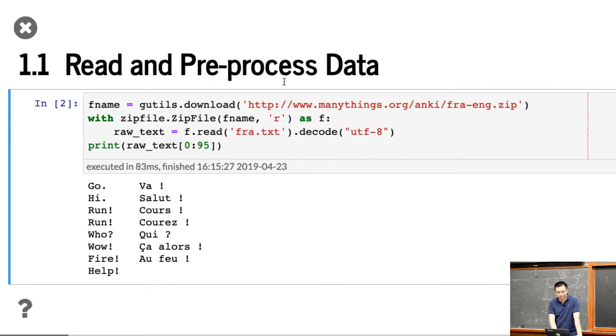We download the tiny dataset from a website called Many Things. We pick up the French to English. There are a lot of languages you can try, English to about 20 different languages. You can pick up any one. So then, you download it. It's actually a text dataset. You just decode as UTF-8.